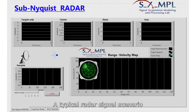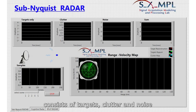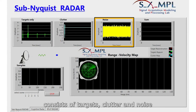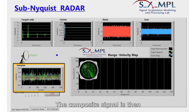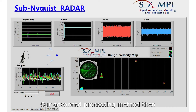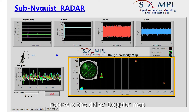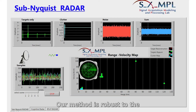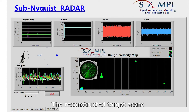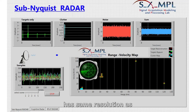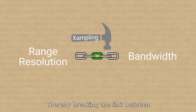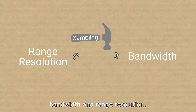A typical radar signal scenario consists of targets, clutter, and noise. The composite signal is then sampled at a low rate via xampling. Our advanced processing method then recovers the delayed Doppler map of detected targets using only the low-rate samples. Our method is robust to the presence of noise and clutter. The reconstructed target scene has the same resolution as if it were sampled at a high rate, thereby breaking the link between bandwidth and range resolution.